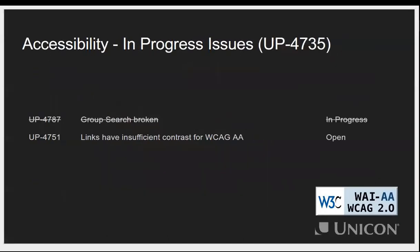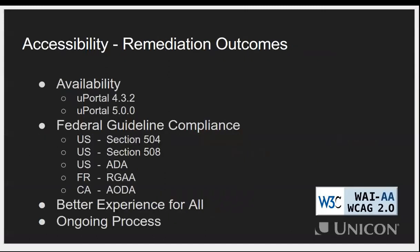There are a couple of issues we haven't had the opportunity to address yet. Late-breaking news: group search was broken a little while ago — we've resolved that issue. There are still a couple of links in uPortal that have been customized and don't have quite sufficient contrast; we'll be digging into that shortly. We're planning to get these changes into uPortal 4.3.2, tentatively targeting late February, and also into the uPortal 5 release around mid-year near the Open Apereo conference.